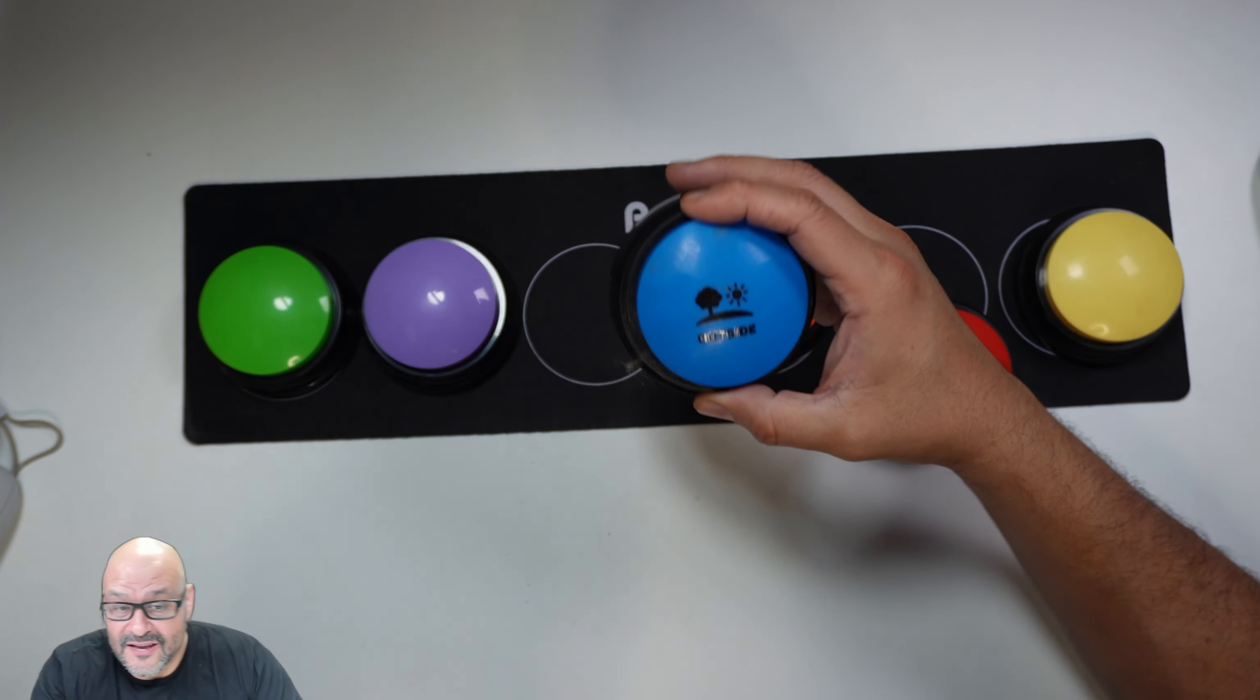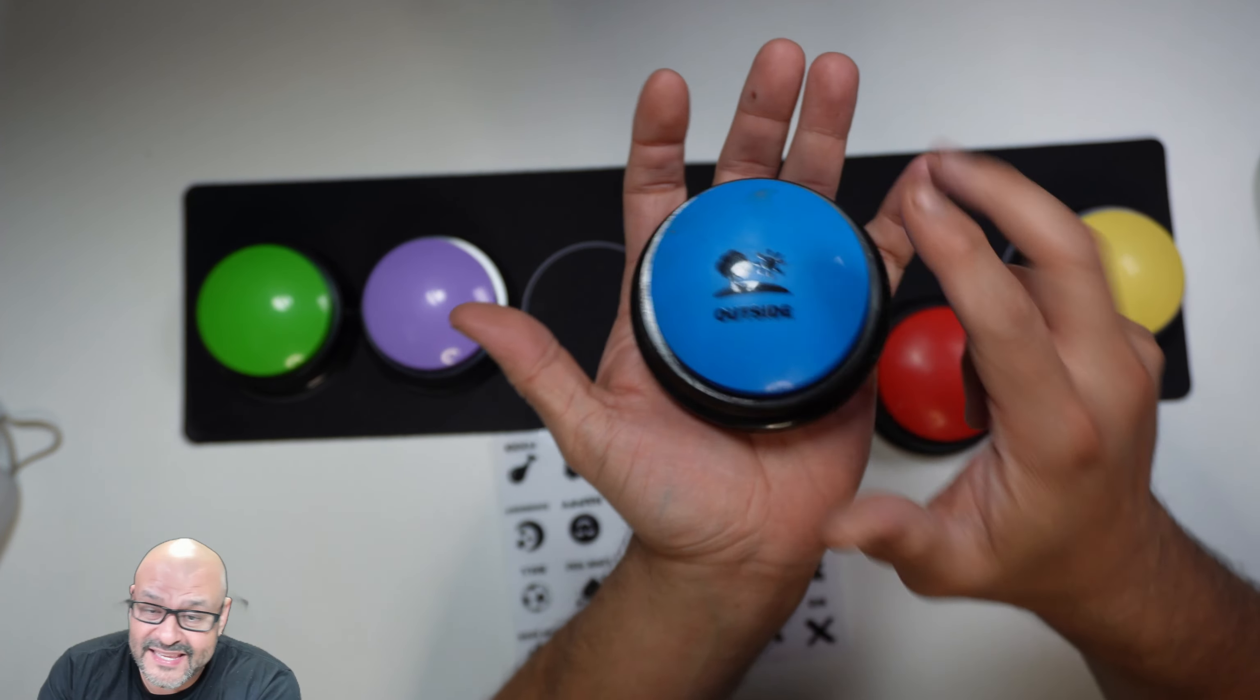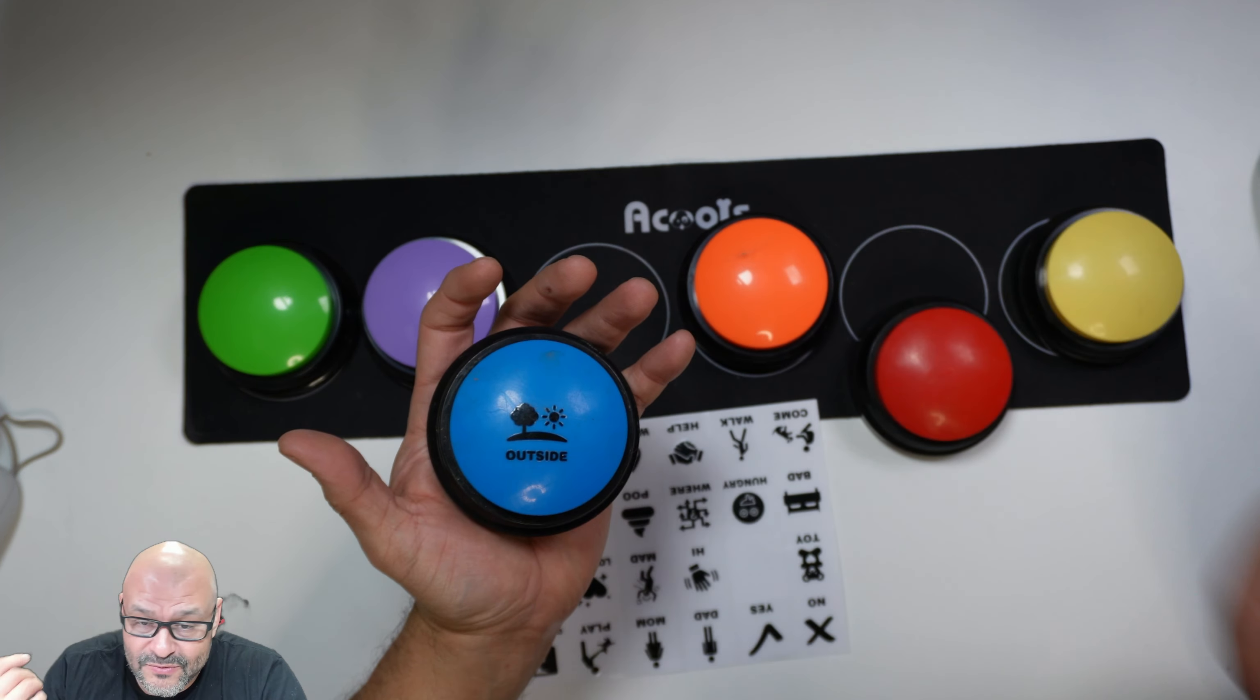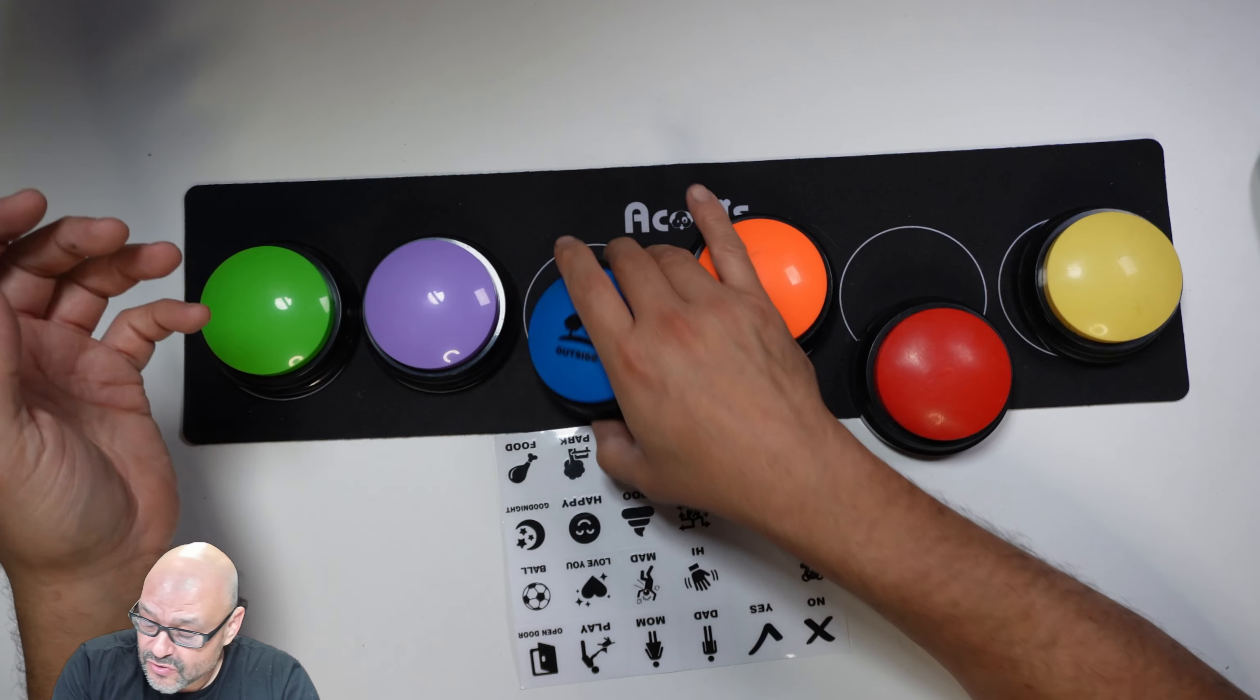So right now, they also include a set of stickers. For example, I put an outside sticker and I did a recording of buttons saying to go outside. And that's where the dog actually starts pushing the button when he wants to go outside. It's very simple to use.